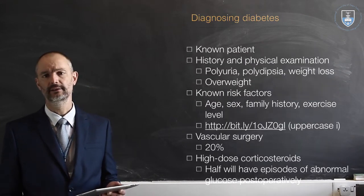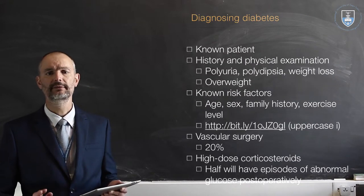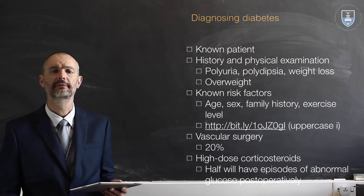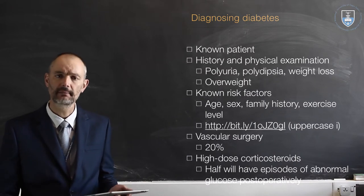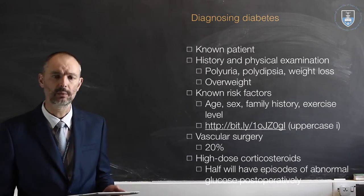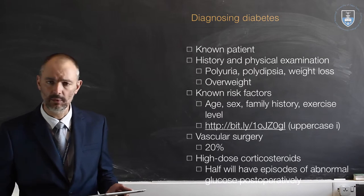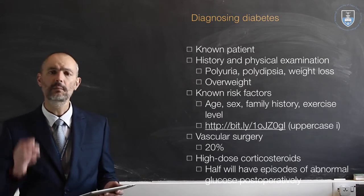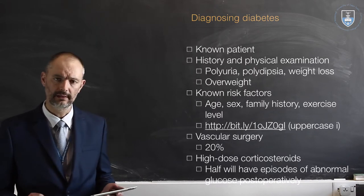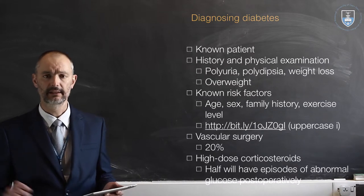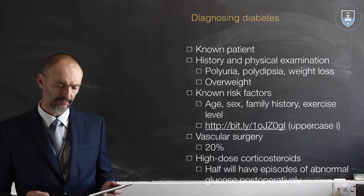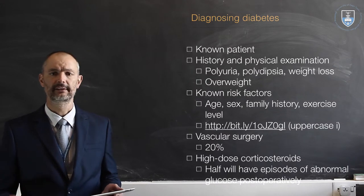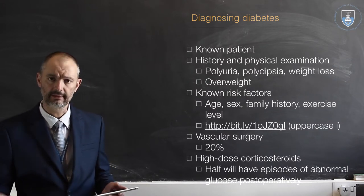So how do we diagnose these patients? First of all, there will be a subset that come in and tell you they have diabetes. It's important to find out what type they have, how long they've had it, what medication they're on, and what comorbid problems they suffer from. Some won't know they have diabetes or are at risk, and for these you really have to take a careful history and physical examination.